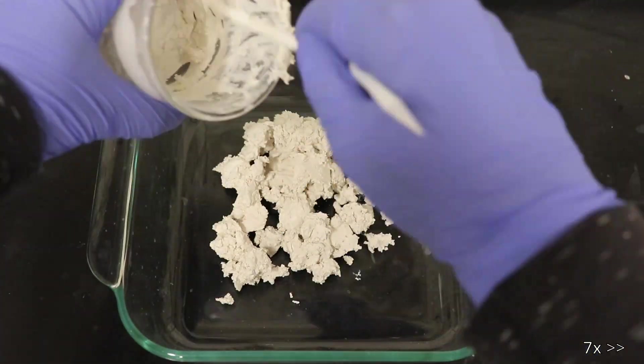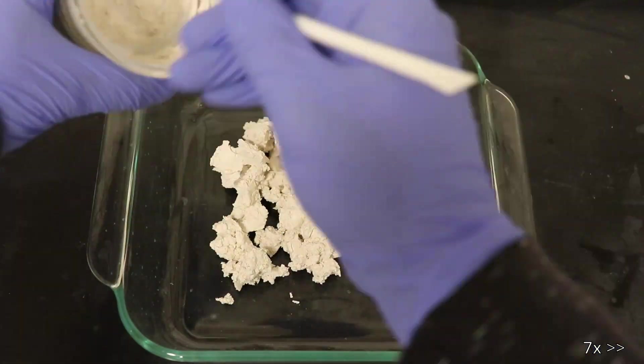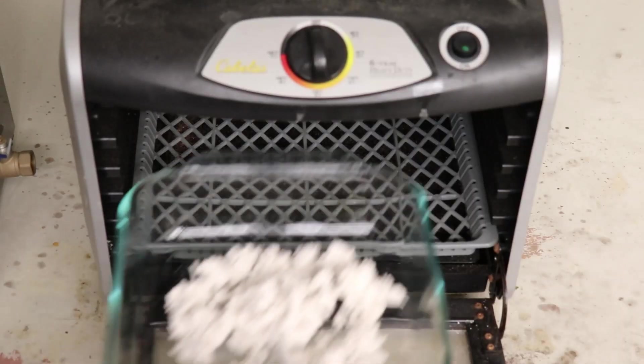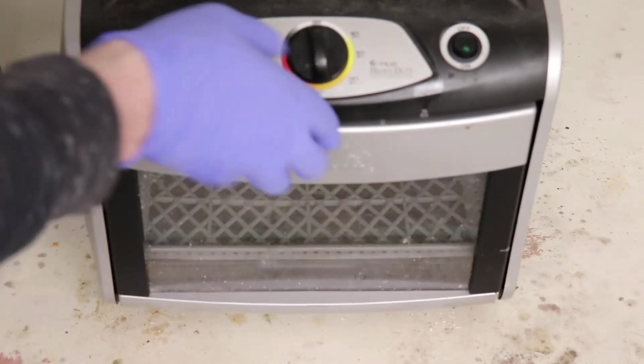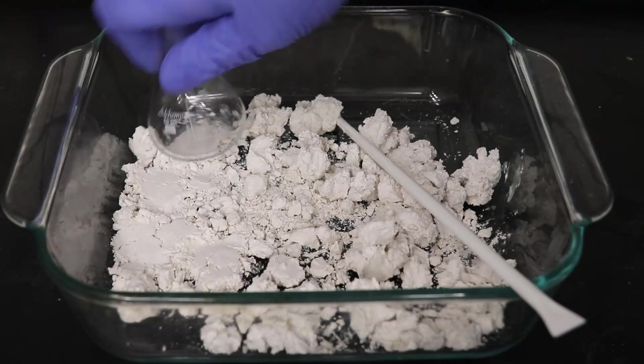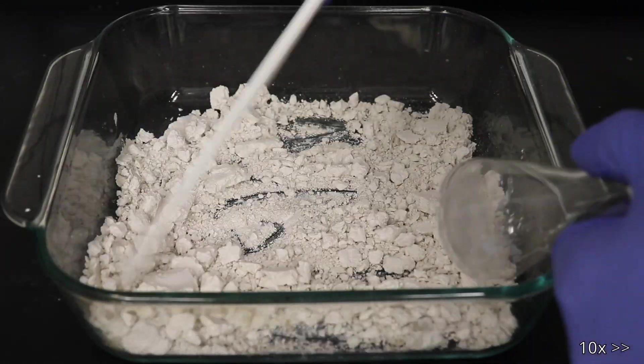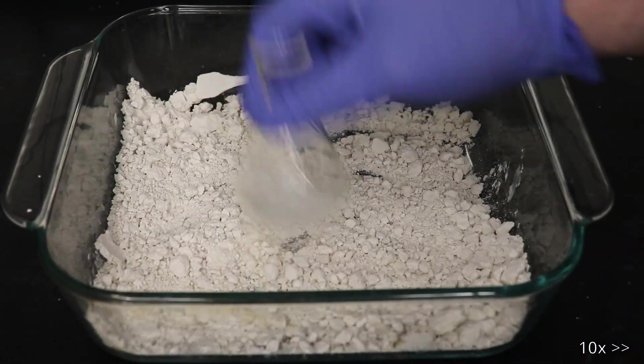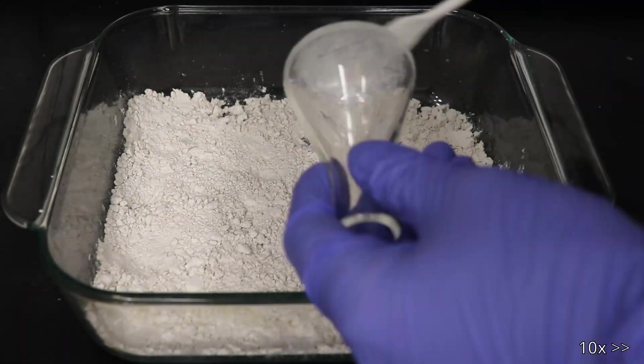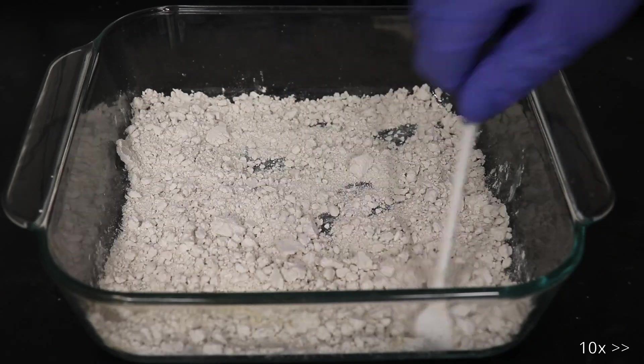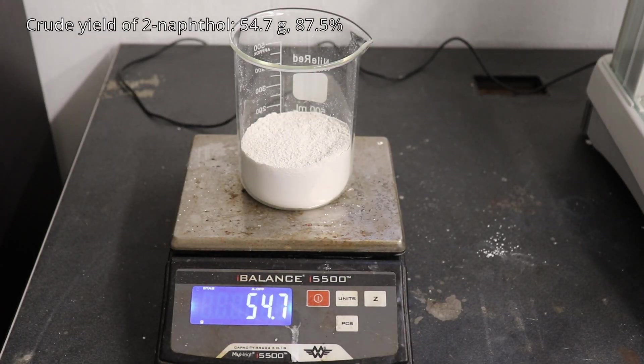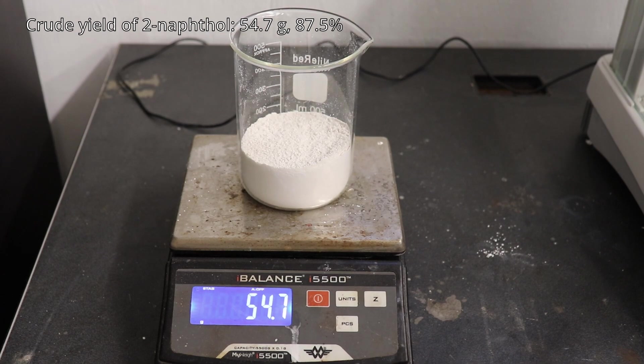After filtration, the 2-naphthol was air dried and ground into a powder. However, the melting point was low at 118 degrees Celsius compared to the theoretical 122 degrees Celsius, so I decided to recrystallize the 2-naphthol from 25% ethanol.